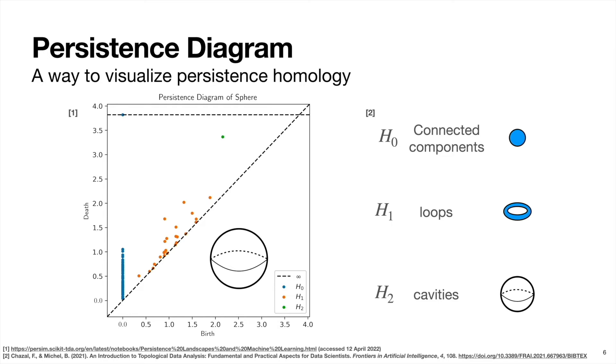The x-axis of this plot indicates the radius at which a hole appeared in the evolution of the data's shape. In other words, in this circle growing process that we showed in this previous slide. And on the y-axis, we have the radius at which that hole disappeared.